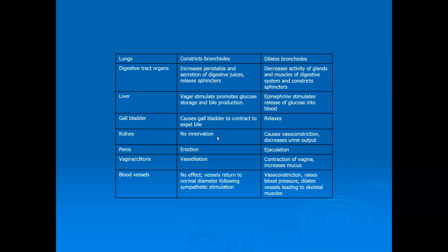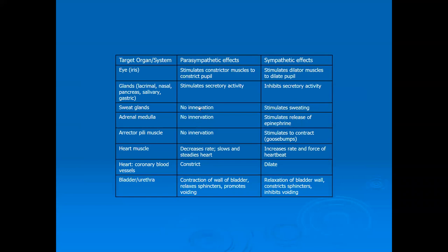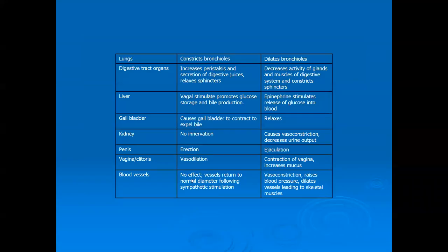There's no parasympathetic innervation to the kidney — the kidney is quite good at taking care of itself. In the penis, parasympathetic stimulation causes erection through vasodilation; in the vagina and clitoris it also causes vasodilation. For most blood vessels, there is no parasympathetic innervation — we just don't tell our vascular smooth muscle to contract, so vessels return to normal diameter following sympathetic stimulation.